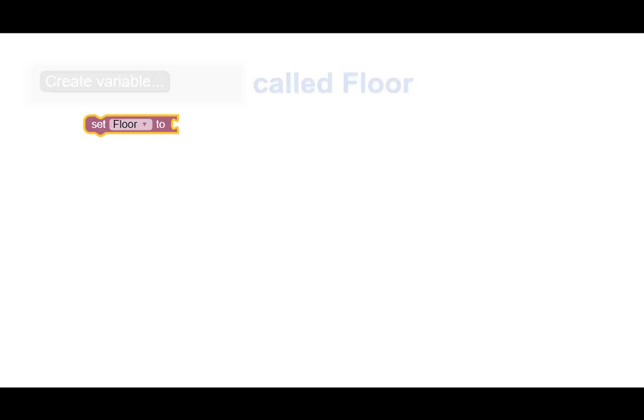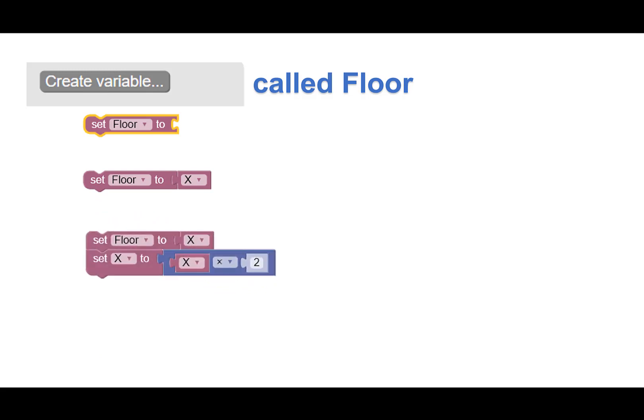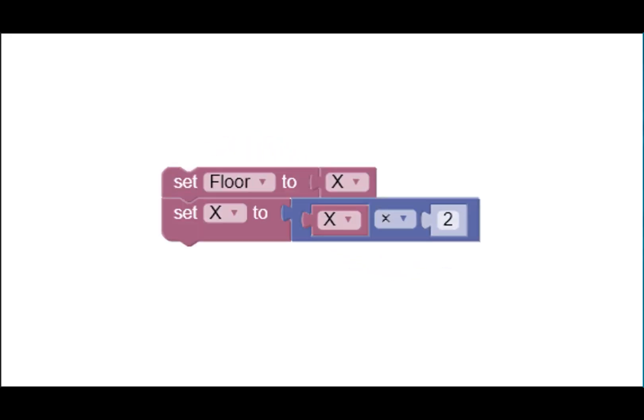I need to put the pieces together in blocks. Great idea. Create a variable called floor, then the variable X. Set the variable X to the equation X times 2. Then put it all together to complete the loop. Great job.